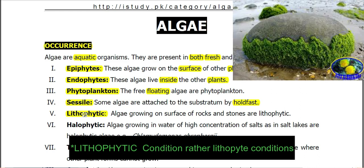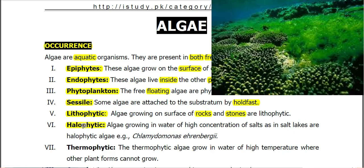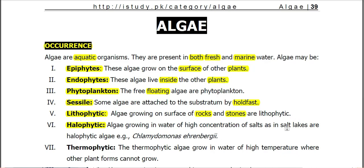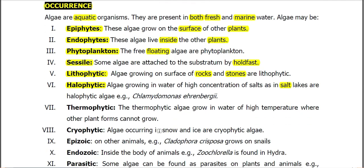Lithophytes is the condition in which algae grow on the surface of rocks or stones. Halophytic algae grow in salt waters or high concentrations of salt, such as salt lakes and in marine conditions.